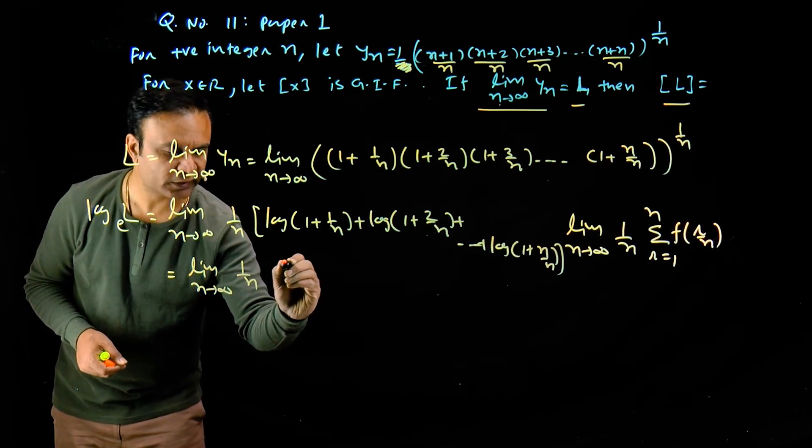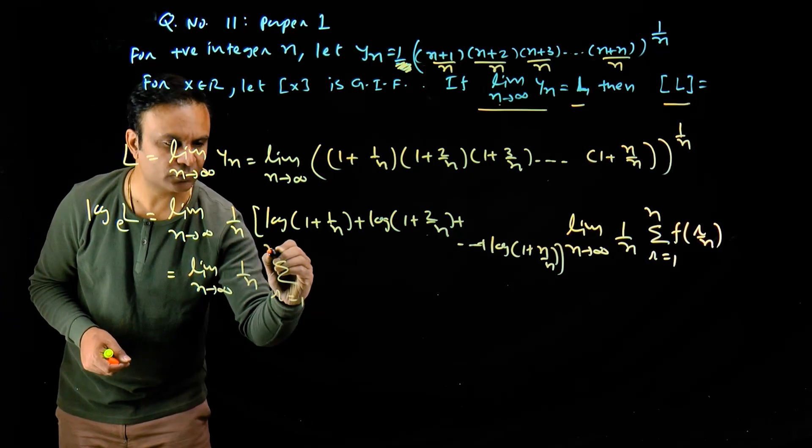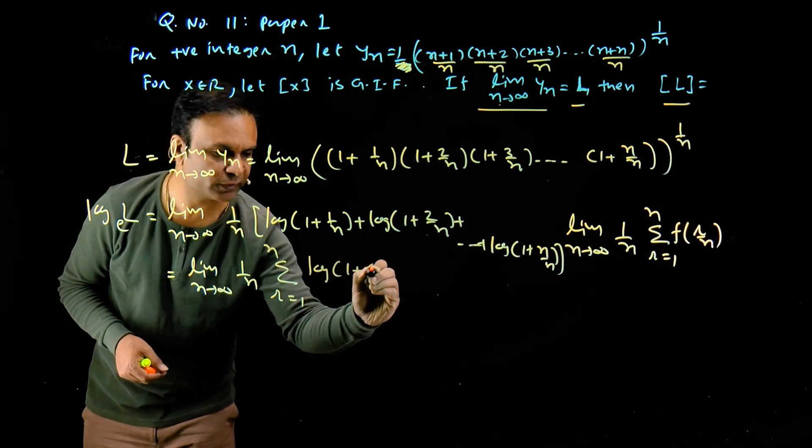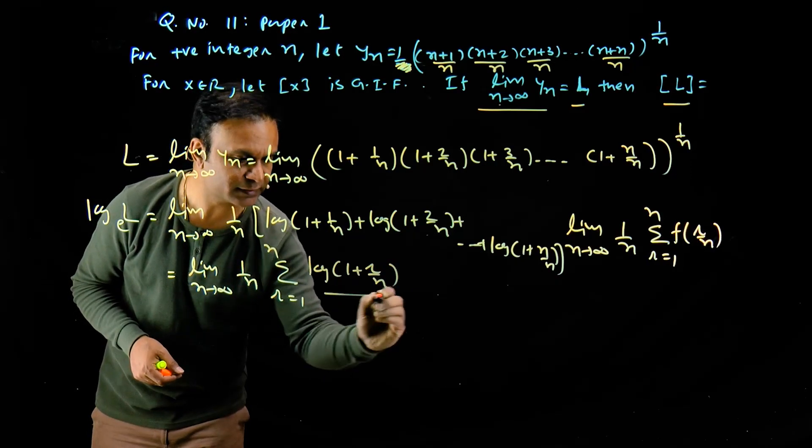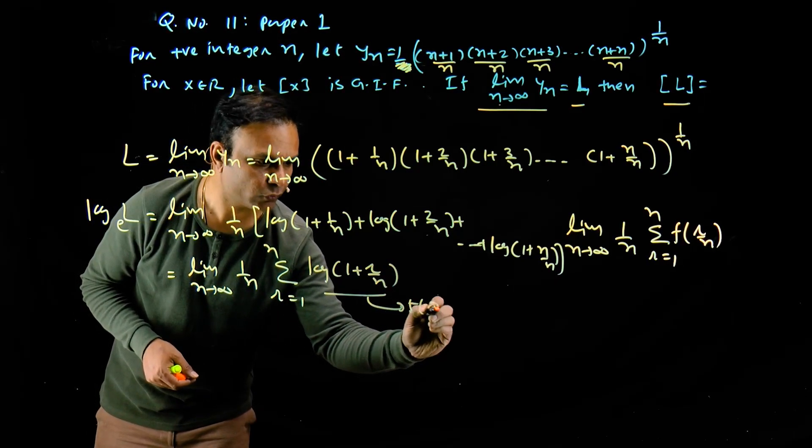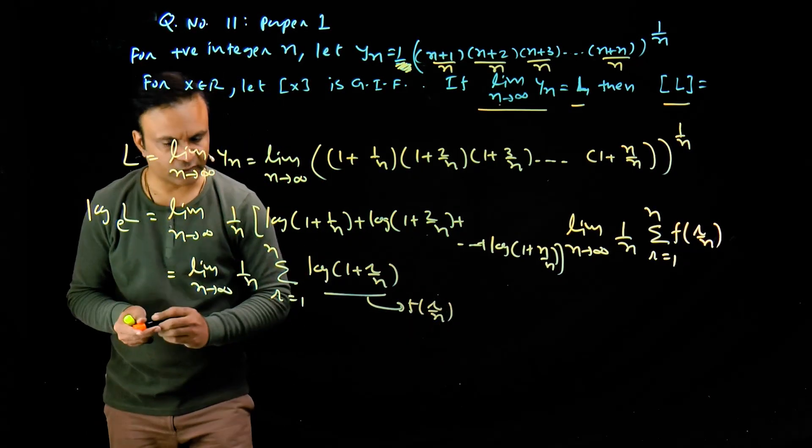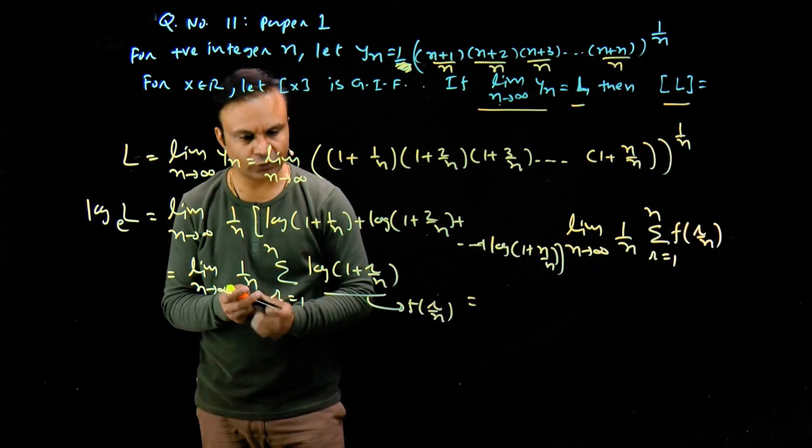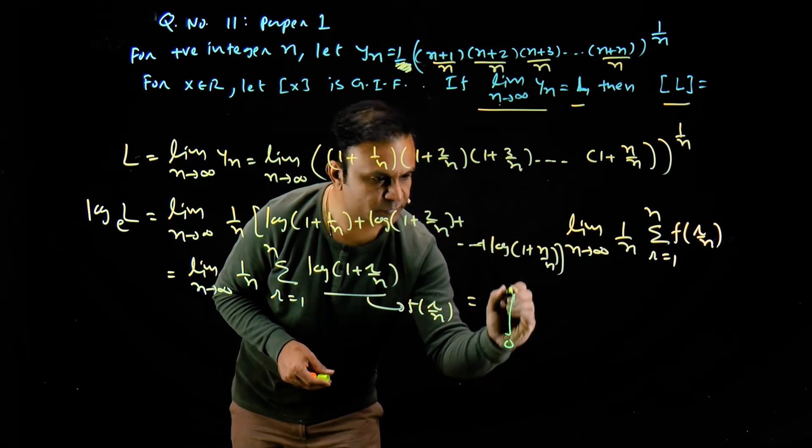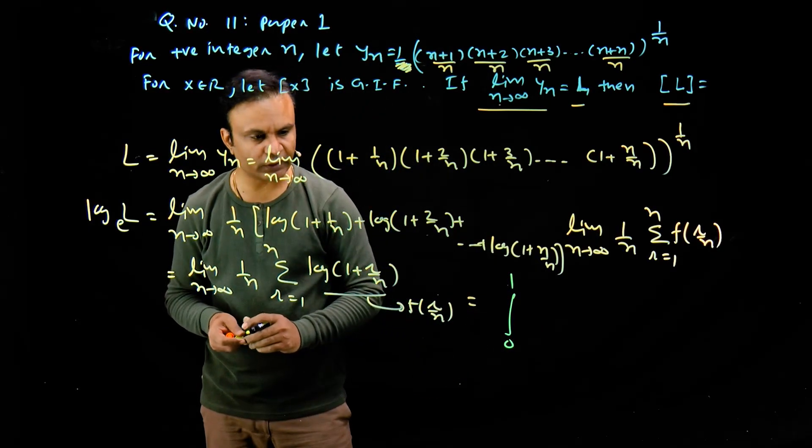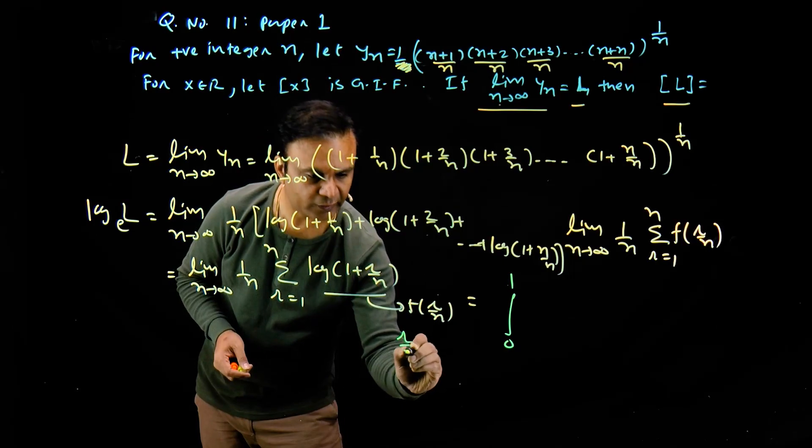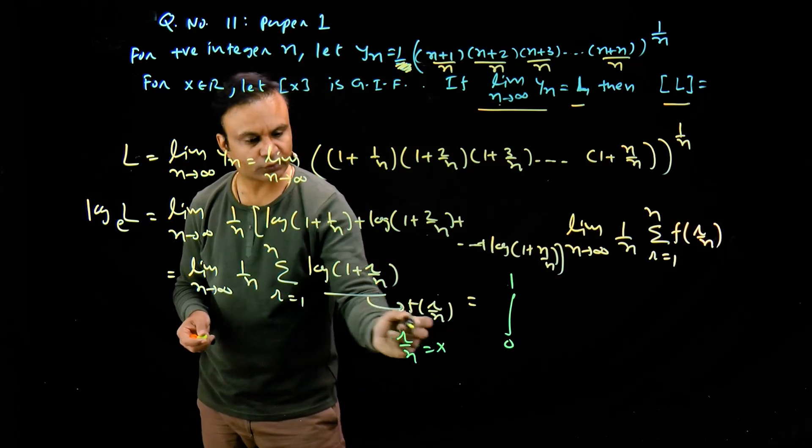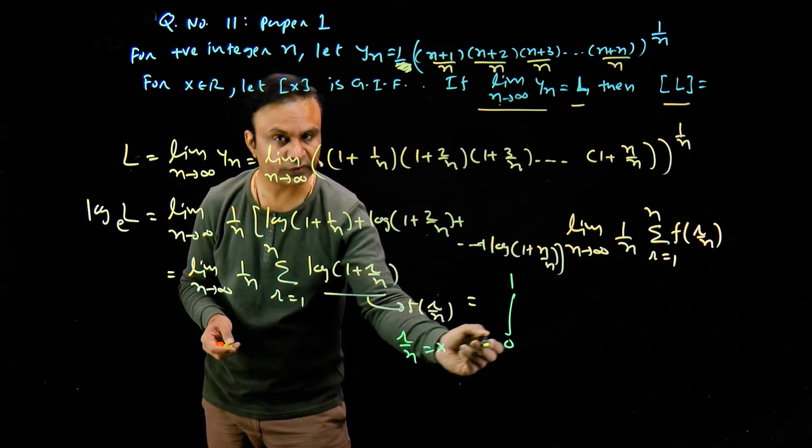This equals limit n tends to infinity of 1 upon n multiply by sigma r equals 1 to n of log(1 + r/n). This is my function f(r/n). From limit of sum formula, this equals integration for limits 0 to 1, because r/n I take as x. When r equals 1 and n tends to infinity, 1/n approaches 0. When r equals n, x equals n/n which is 1.